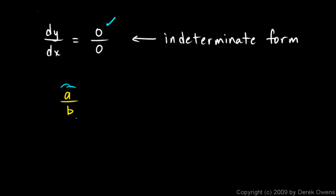The problem here is when they're both zero. Is this thing, this fraction, is it going to equal zero because there's a zero numerator? Or is it going to equal infinity because there's a zero denominator?